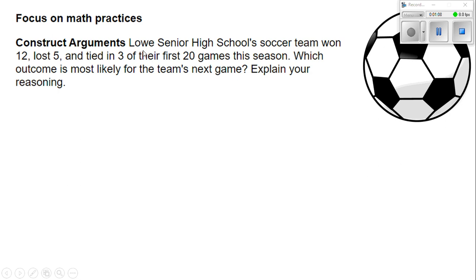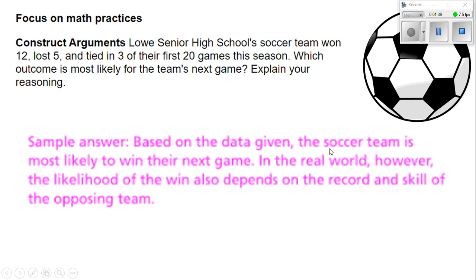Lowell Senior High School Soccer Team won 12, lost five, and tied three of their first 20 games this season. Which outcome is most likely for the team's next game? The team has a very high win record, so we would expect the team to win. But it's not guaranteed because we have no idea of the record of the opposing team. Based on the data, the soccer team is most likely to win their next game. In the real world, however, the likelihood of a win also depends on the record and skill of the opposing team.